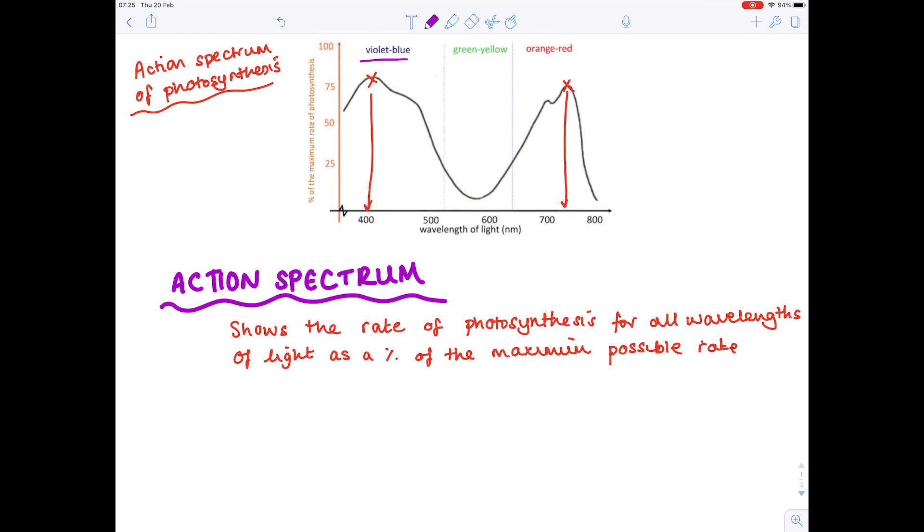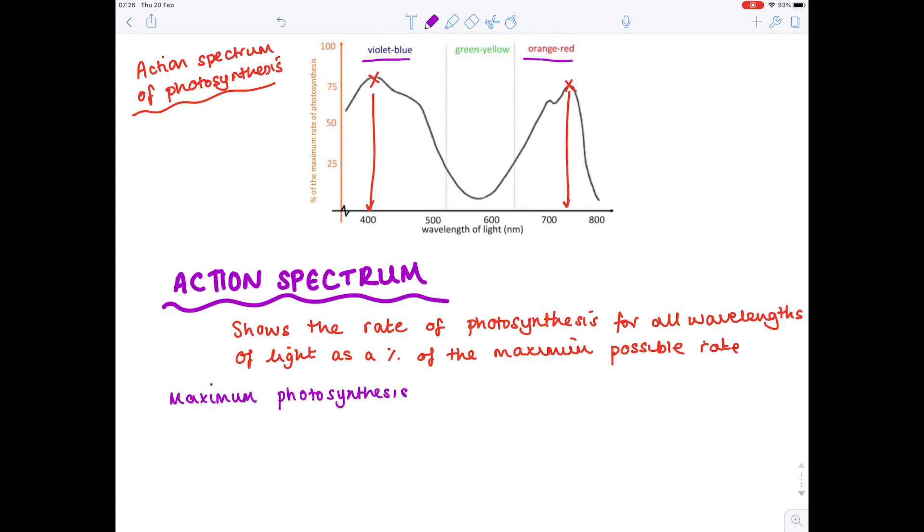And then we can also see that just over 700 nanometres we see great efficiency of photosynthesis and that occurs at the orange-red wavelength of light. So underneath the graph I'm going to write exactly what I've just said. So maximum photosynthesis rates occur firstly in blue light followed by in red light.